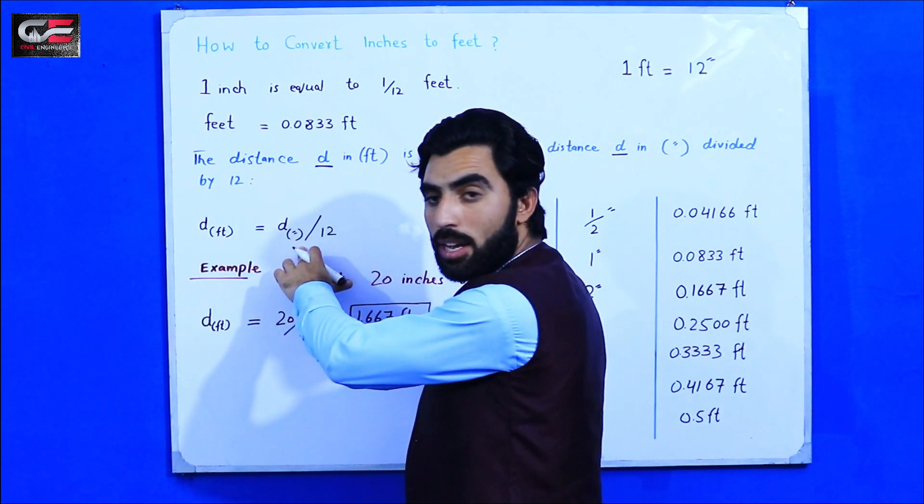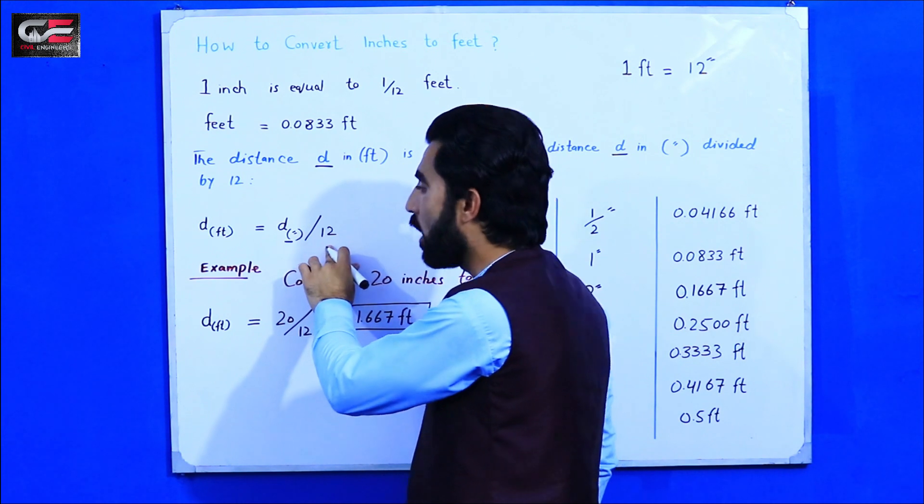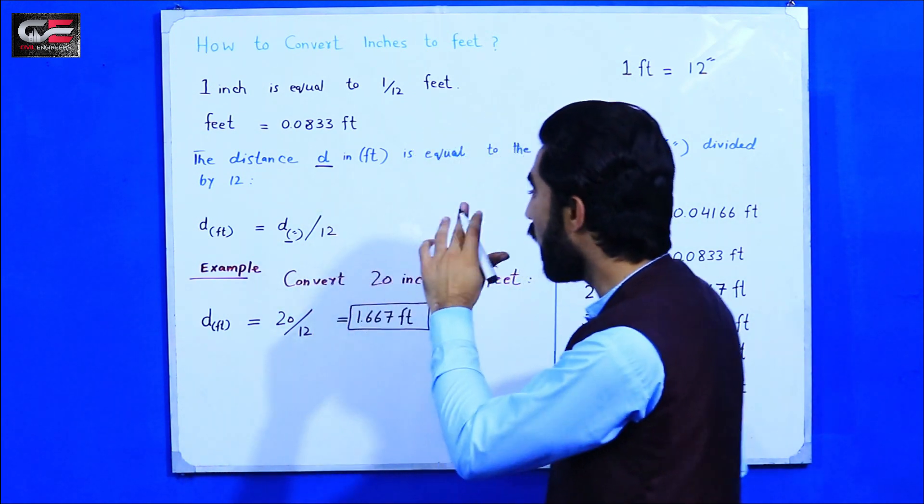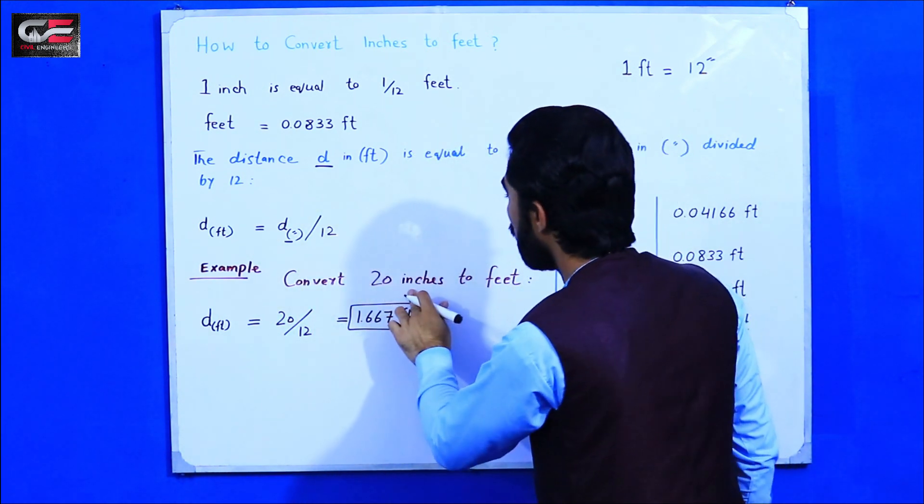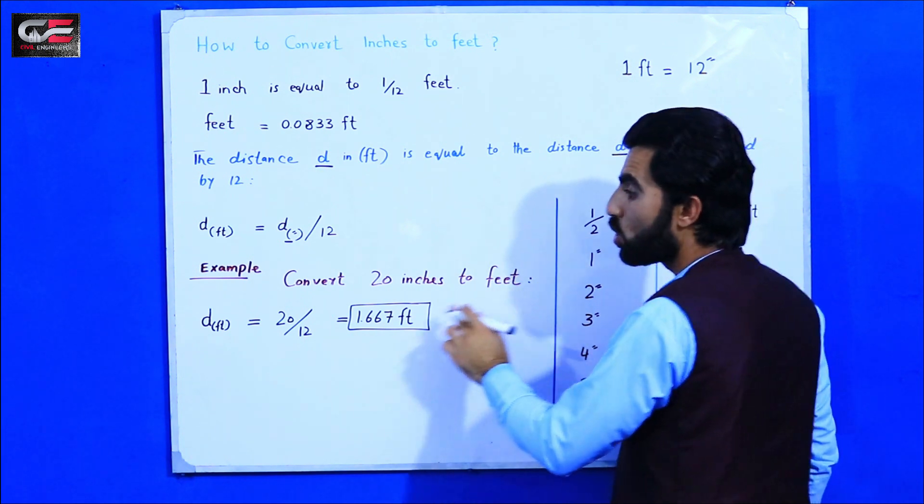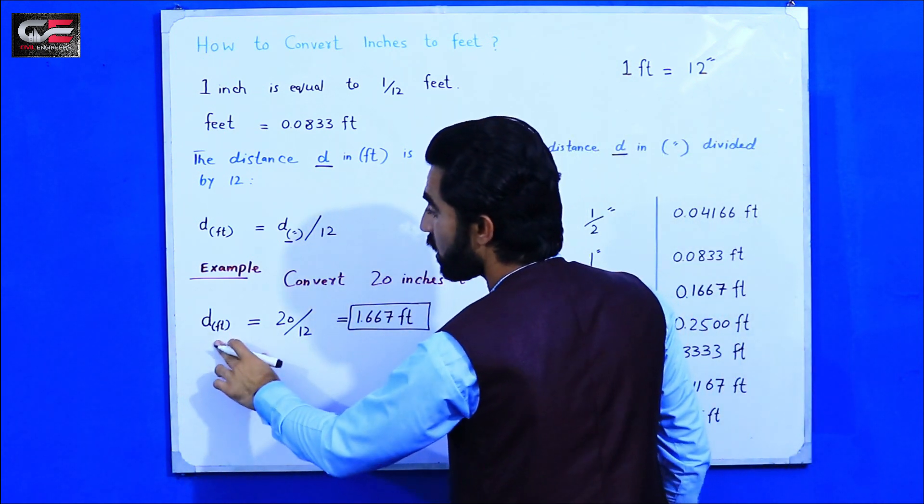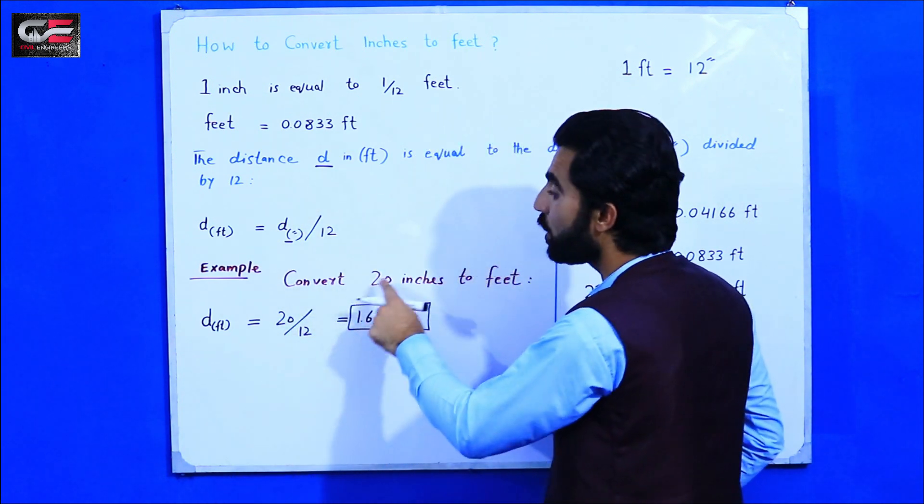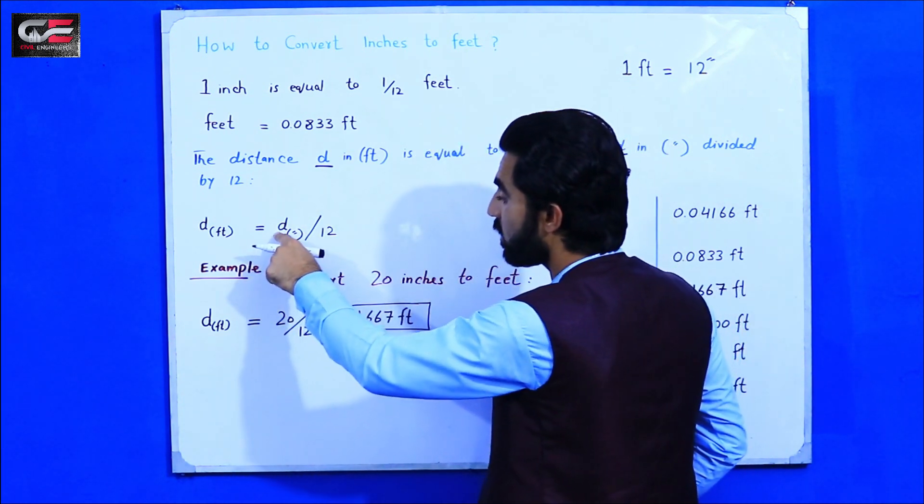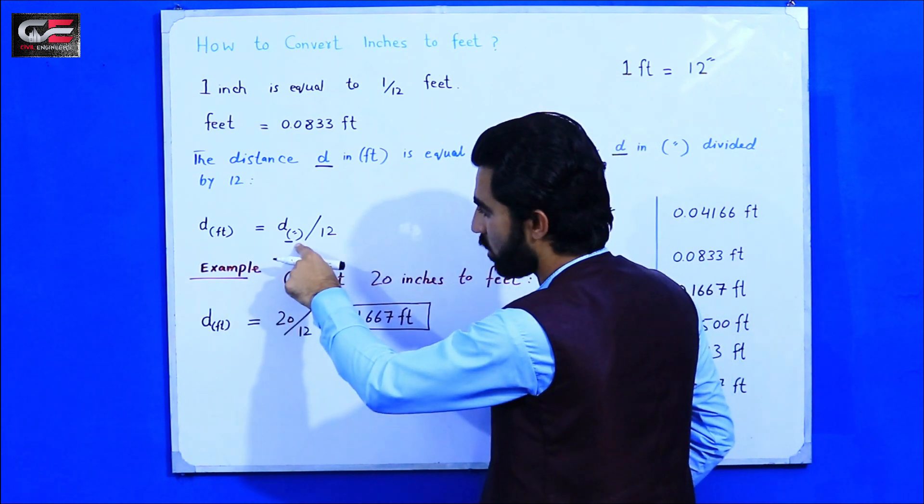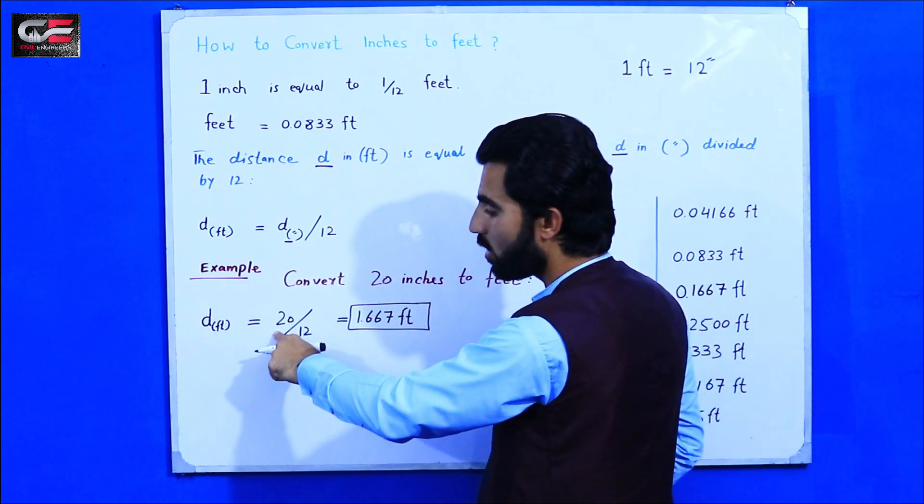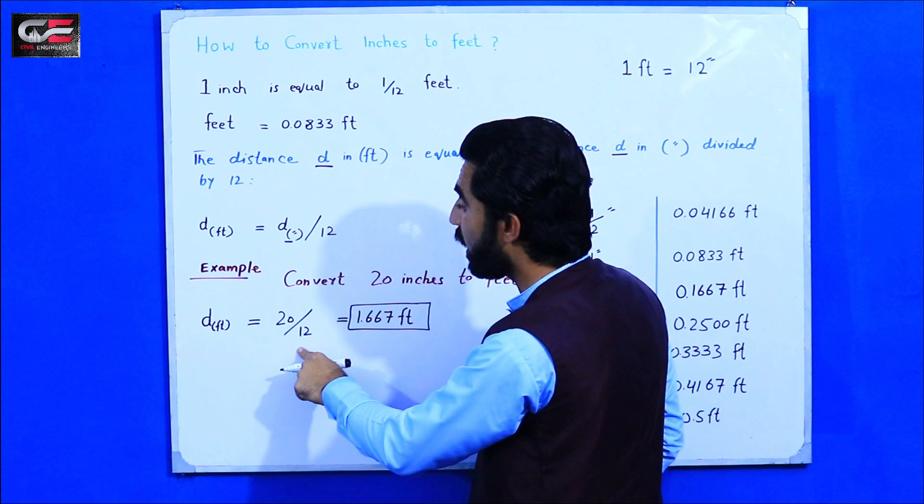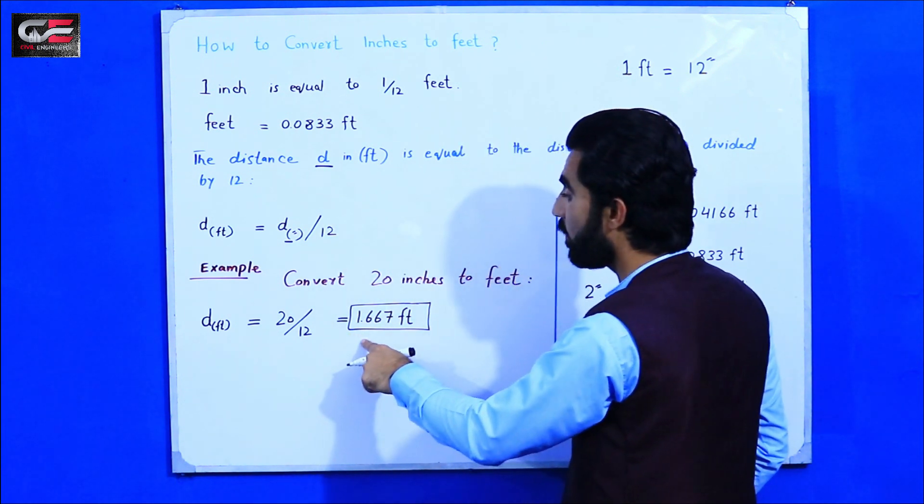For example, convert 20 inches to feet. Distance in feet is equal to 20, the distance in inches, divided by 12. So it will give us 1.667 feet.